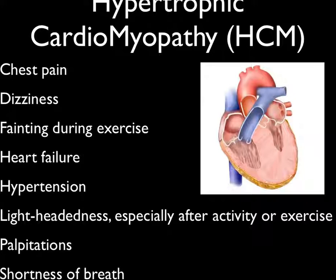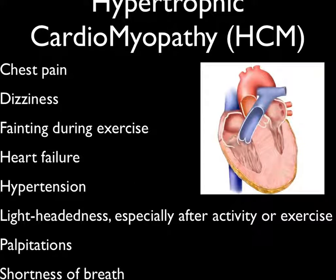The physical exam can only pick up about 3% of patients before they experience sudden cardiac death. One study found that the incidence of sudden cardiovascular death in young competitive athletes declined in the Veneto region of Italy after screening was introduced. The cardiogram can detect hypertrophic cardiomyopathy with 80% accuracy.